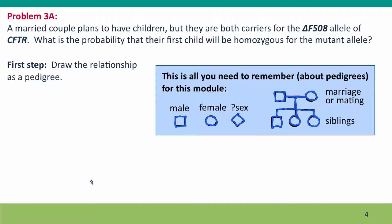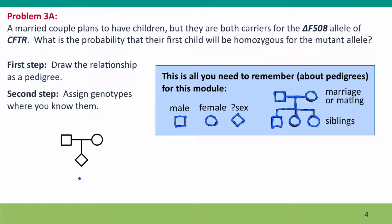To draw a pedigree illustrating this relationship, we've got the father, the mother, and the child who isn't born yet — so we don't know the sex, and we draw a diamond. The next step is to draw onto this pedigree any genotypes we actually know. In this case, we know the parents are heterozygous for the defective allele, so we label them plus-minus. We don't know the child's genotype yet.